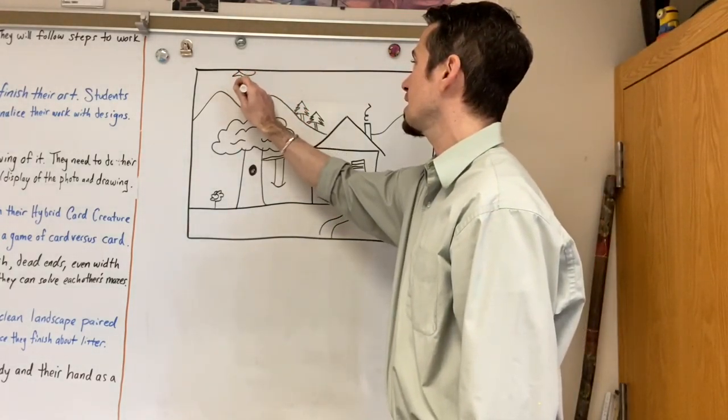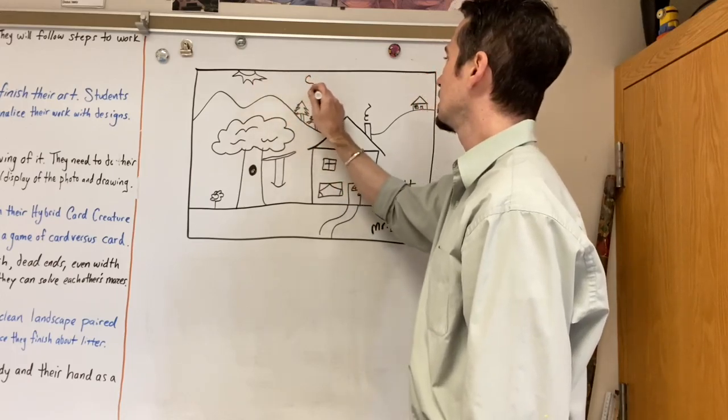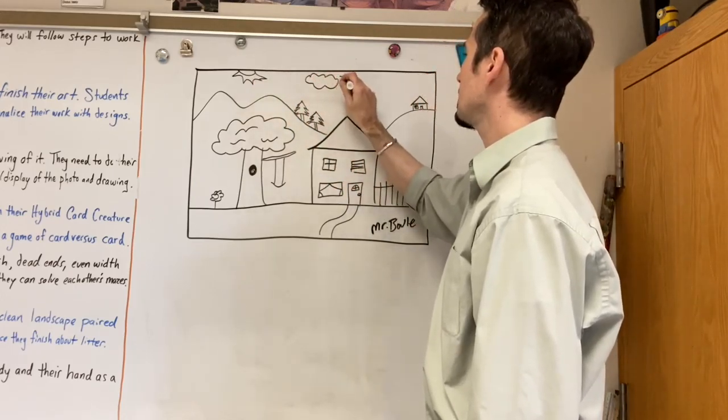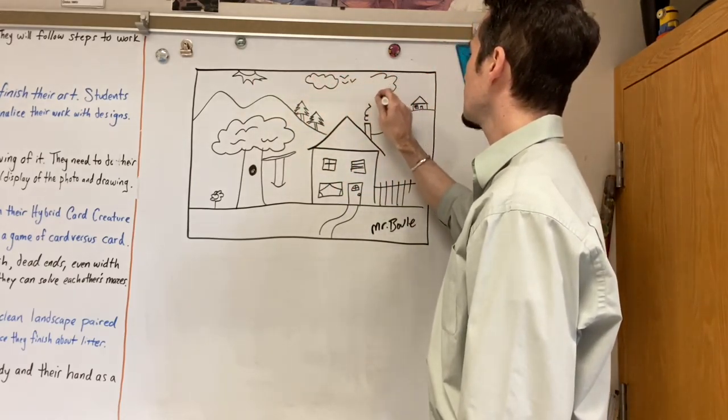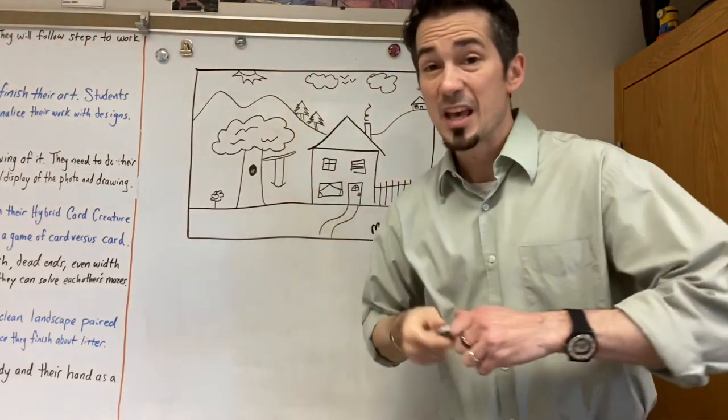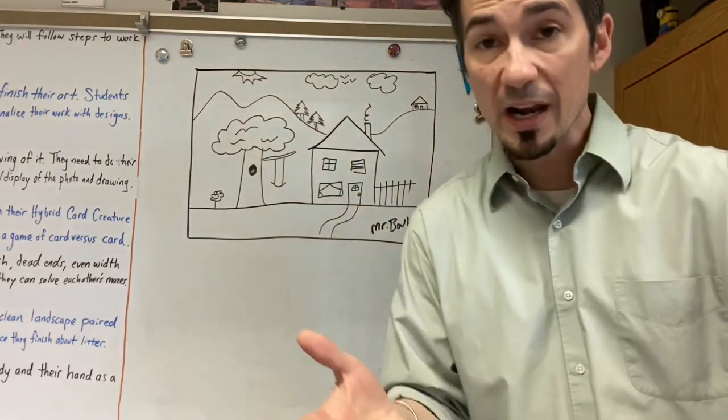Add maybe some extra details. Maybe I got a sun. Maybe some clouds. Maybe a couple birds in the sky. This is your nice landscape. And when you're good with your landscape, you want to add color.